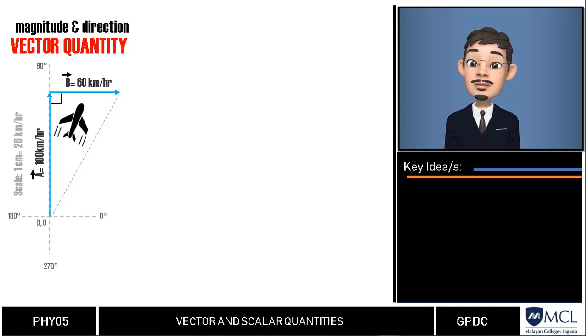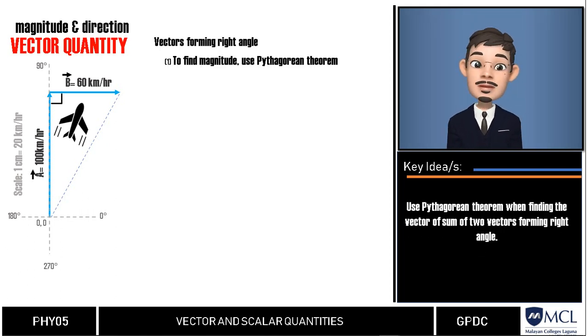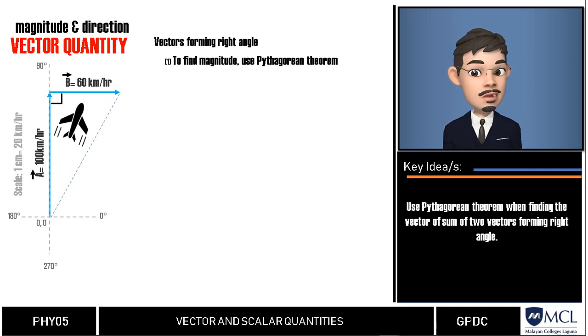To add two vectors forming right angle, we could use the Pythagorean theorem. Again, this states that the square of the hypotenuse of a right triangle is equal to the sum of the squares of the other two sides. In this case, our hypotenuse is our resultant vector.